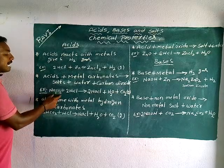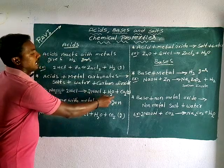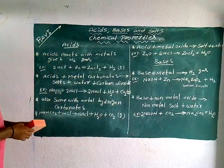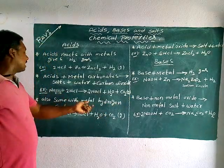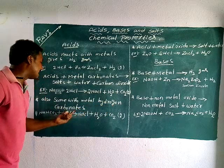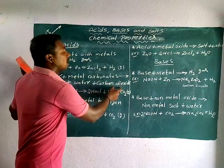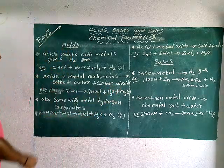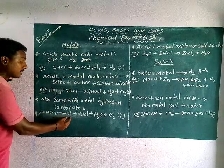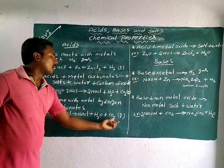For example, sodium carbonate reacts with acid. The third property: acids react with metal hydrogen carbonates. For example, sodium hydrogen carbonate reacts with hydrochloric acid to give sodium chloride salt, water, and carbon dioxide.